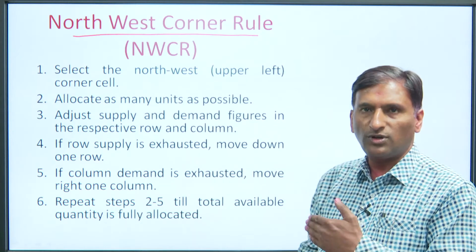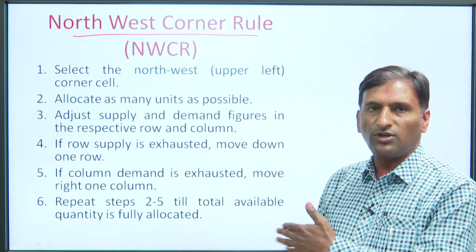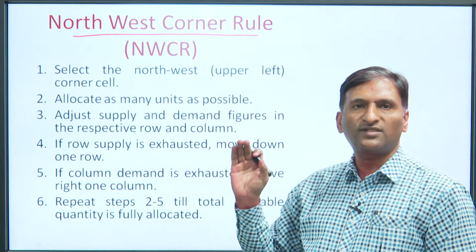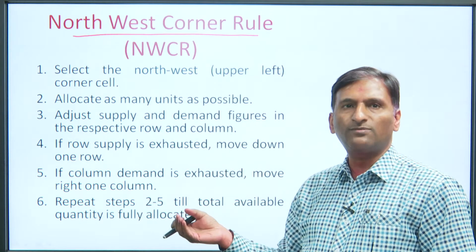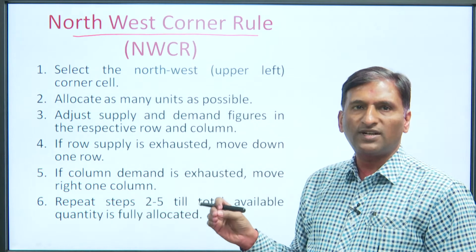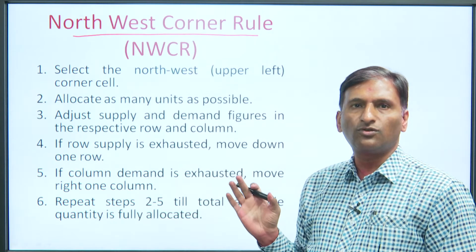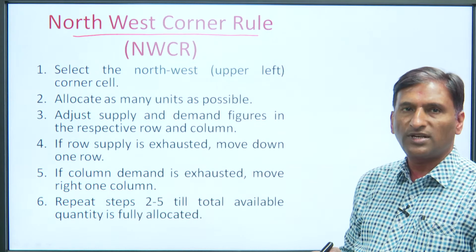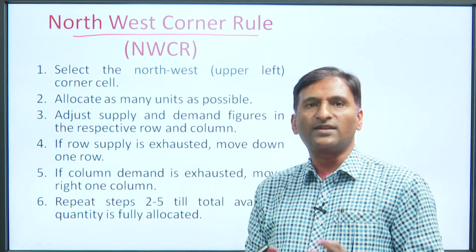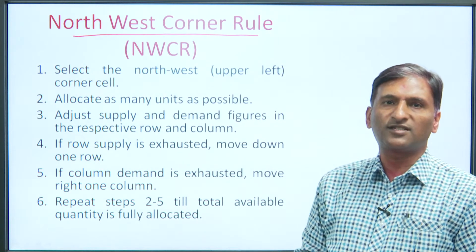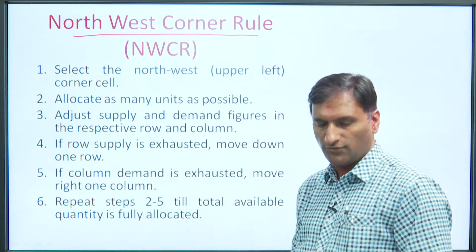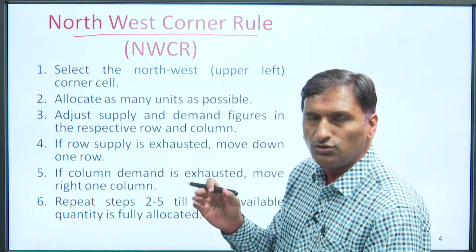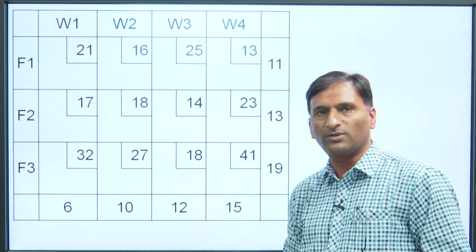The steps of the North West Corner Rule are given. Let us understand them using the same problem. The steps are: select the north-west (upper-left corner) cell; allocate as many units as possible; adjust supply and demand figures in the respective rows and columns; if row supply is exhausted move down one row; if column demand is exhausted move right one column; repeat these steps till the total available quantity is fully allocated.